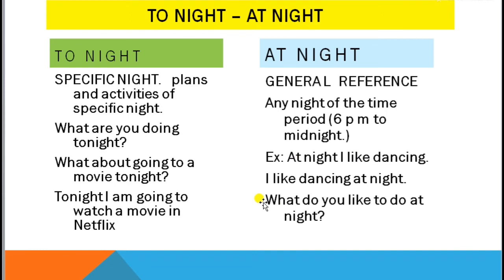So that is the subtle difference between 'tonight' and 'at night.' 'At night' is a general reference to plans and activities, while 'tonight' refers to a specific night and its plans and activities. I hope you learned the difference between 'tonight' and 'at night.' Leave a comment using these two words in the comment section!